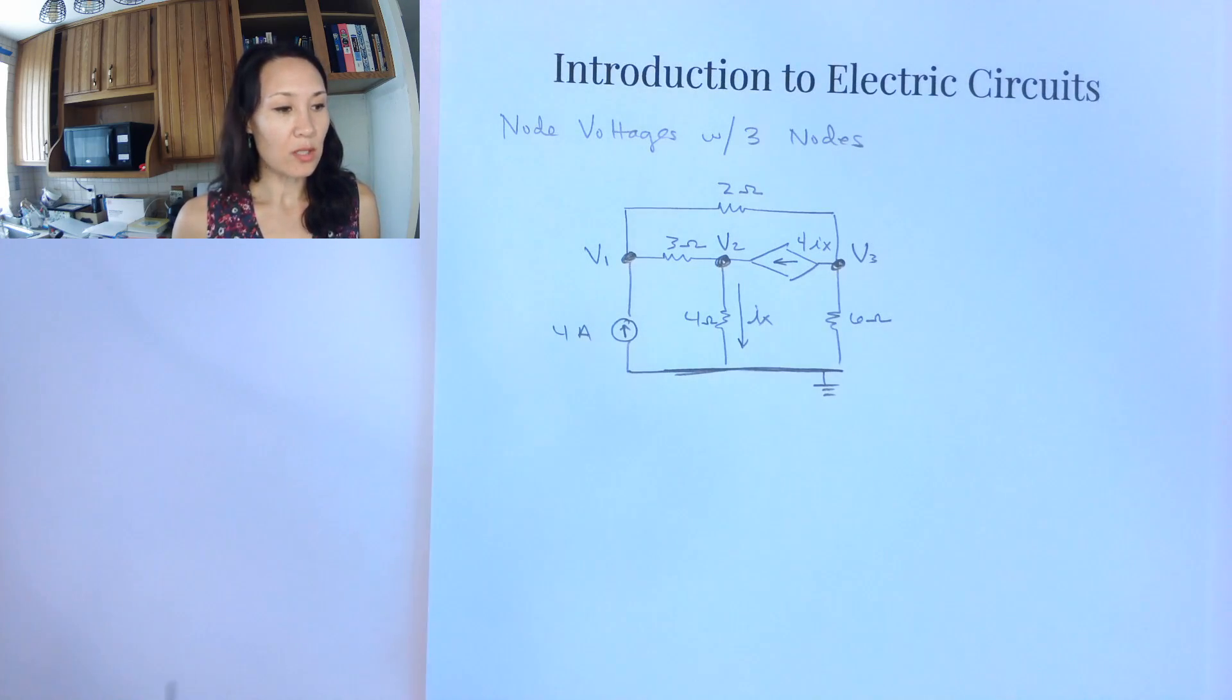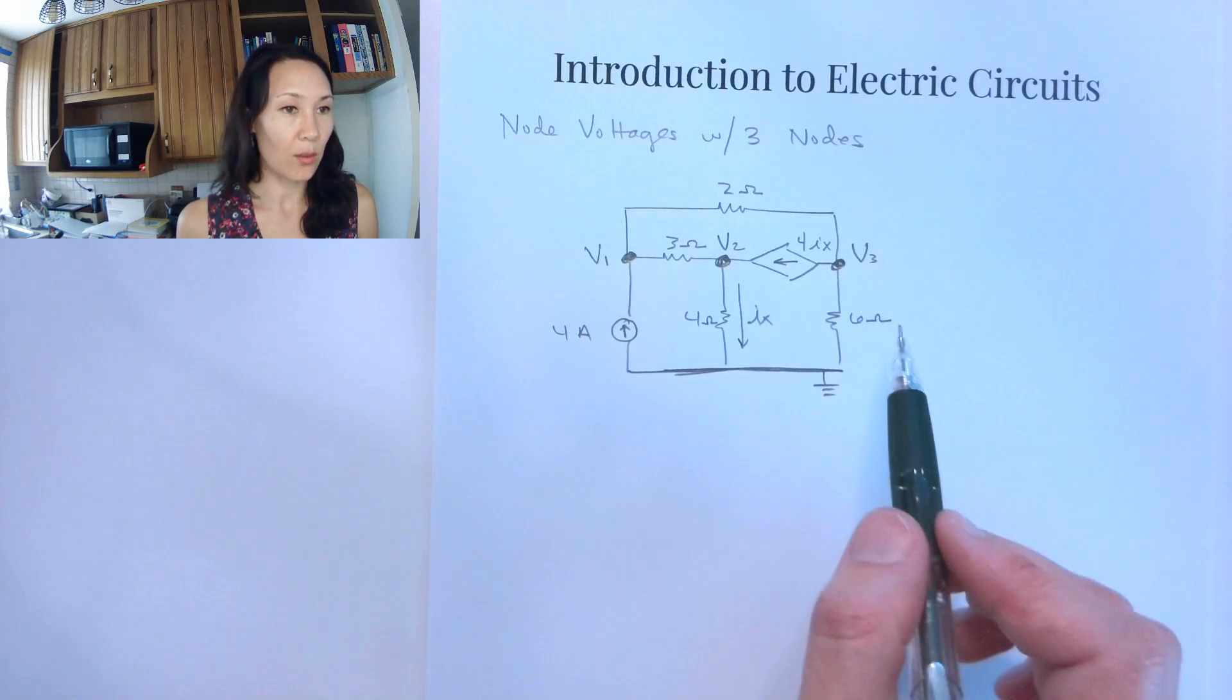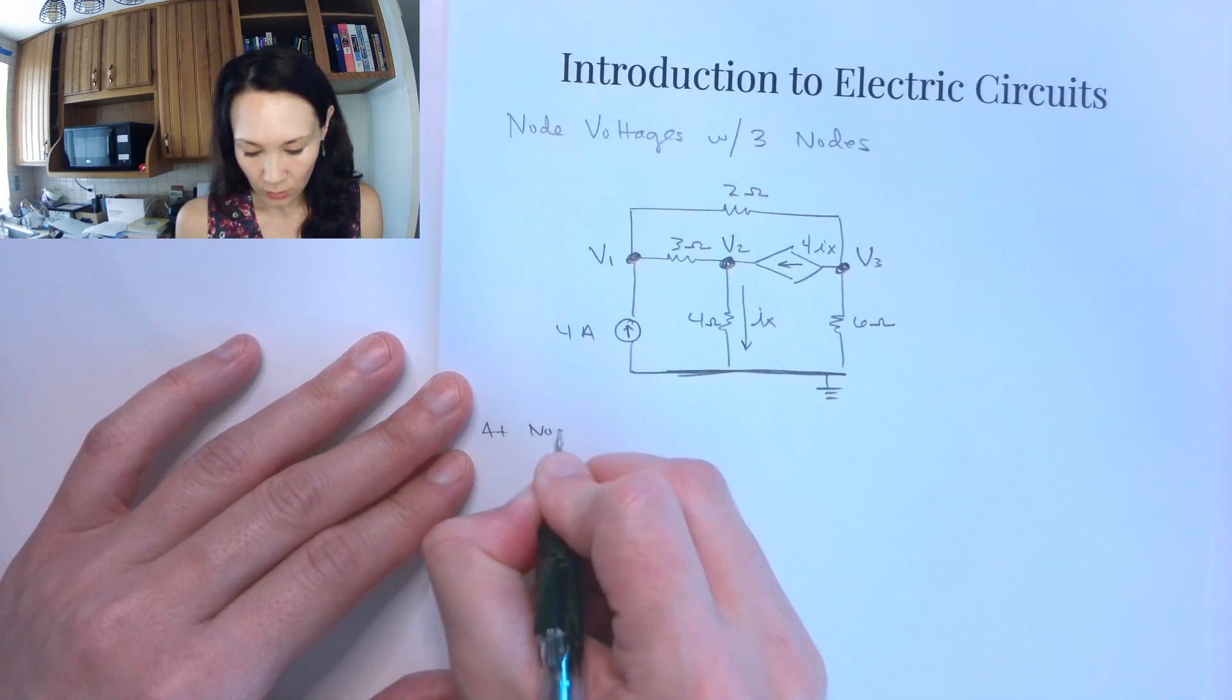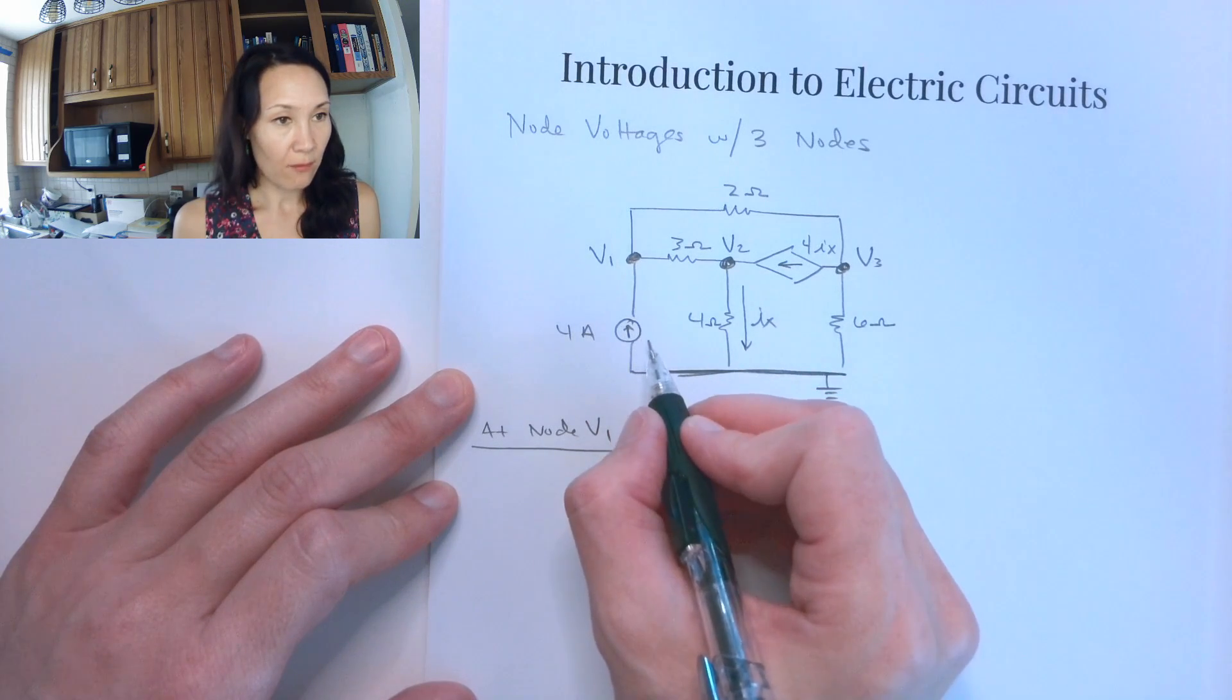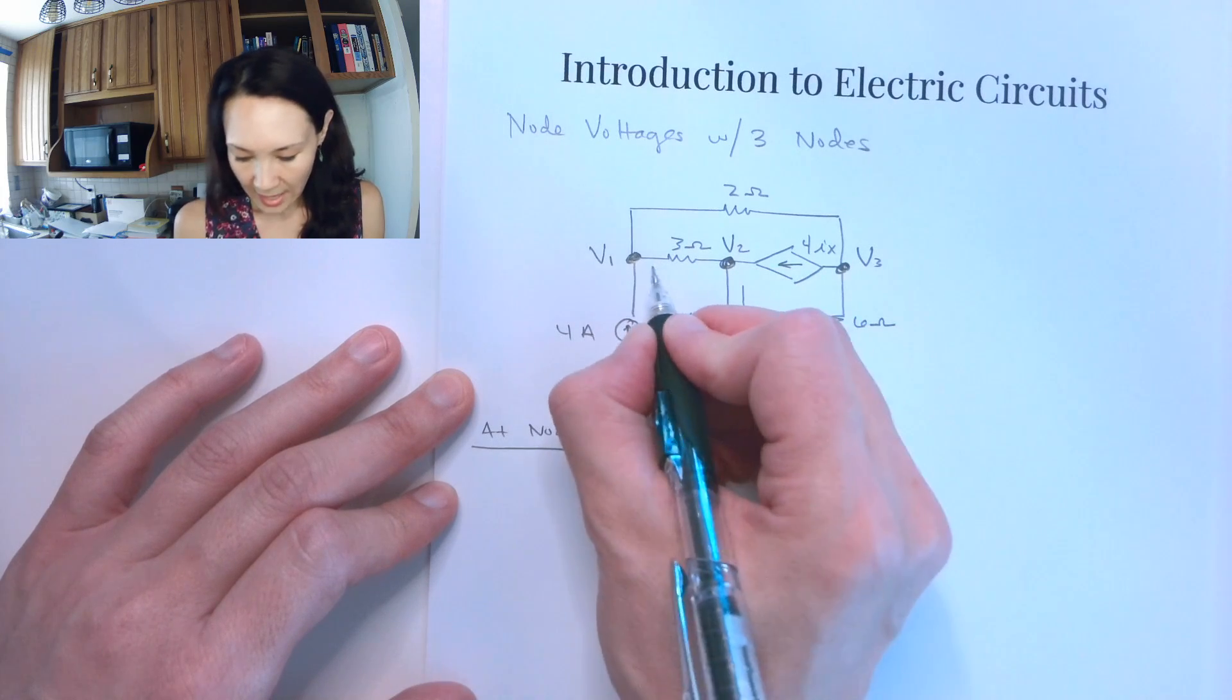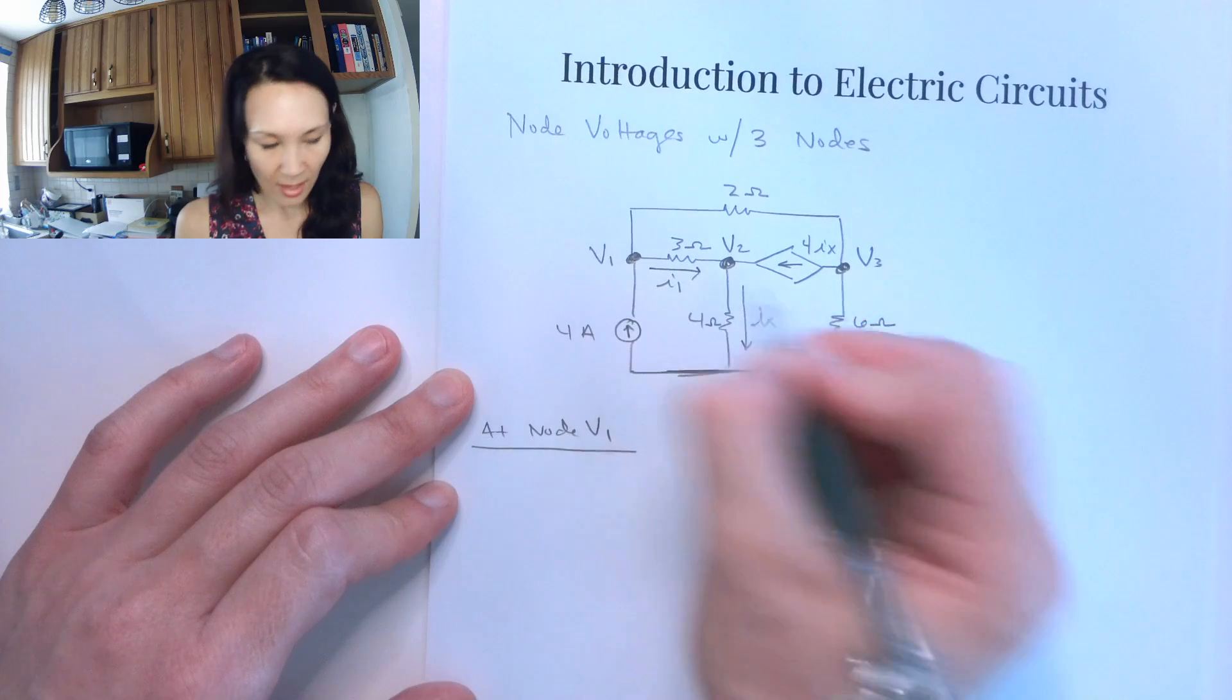So those are the first two steps for node voltage method. The next thing we want to do is we want to use KCL at each one of these nodes to write the currents going in and out. Okay. So I'll start with at node V1. So at V1, we have 4 amps coming in due to this current source.